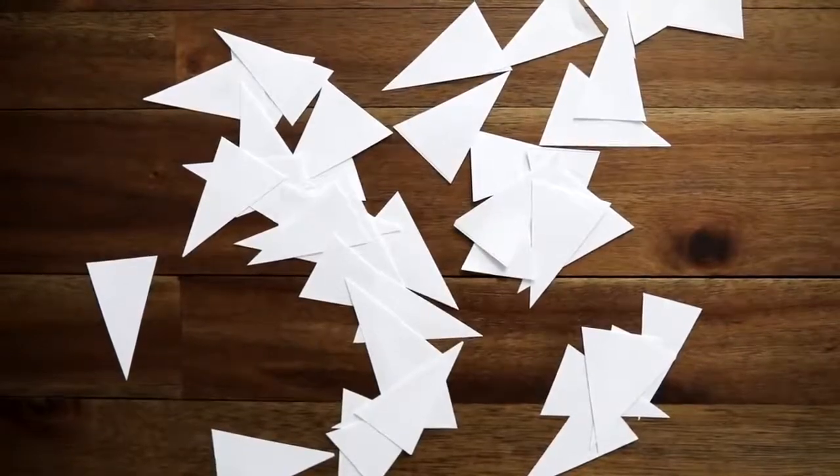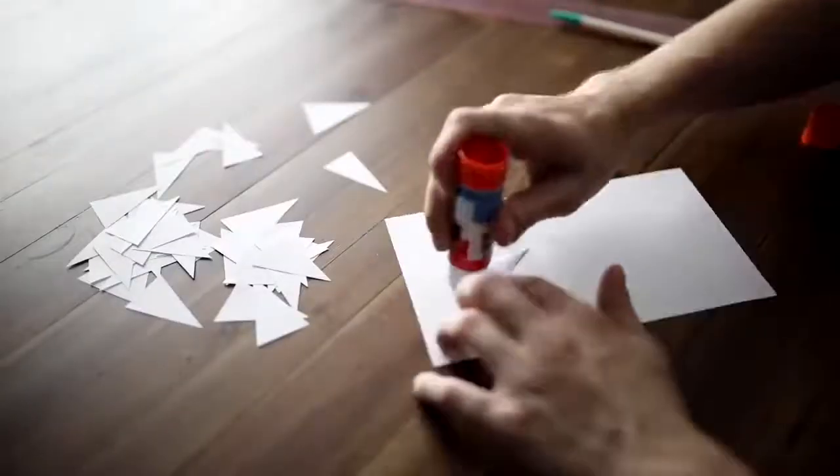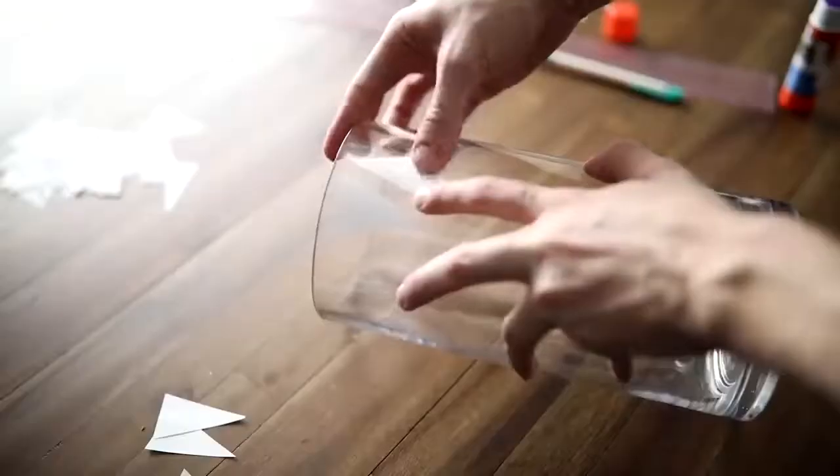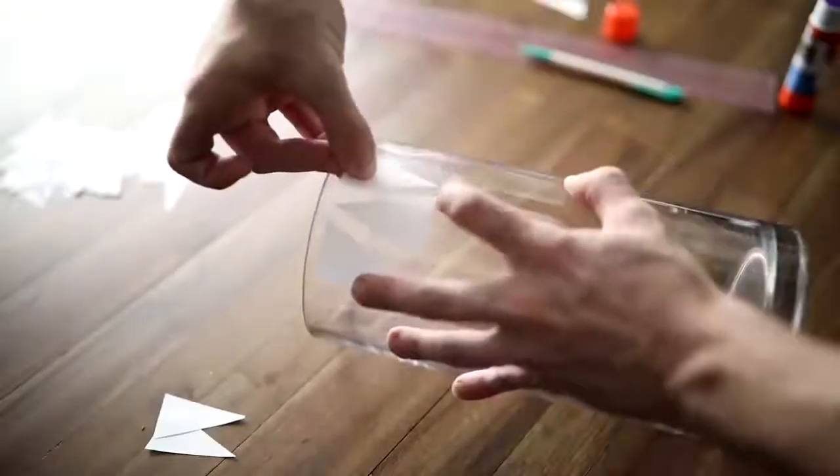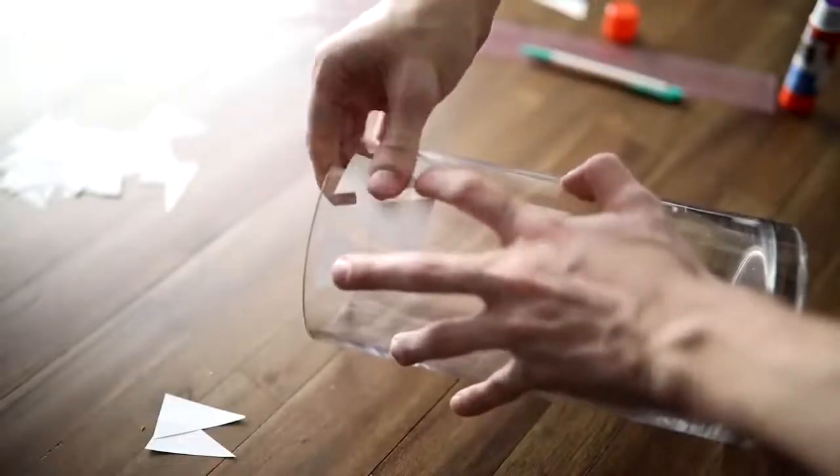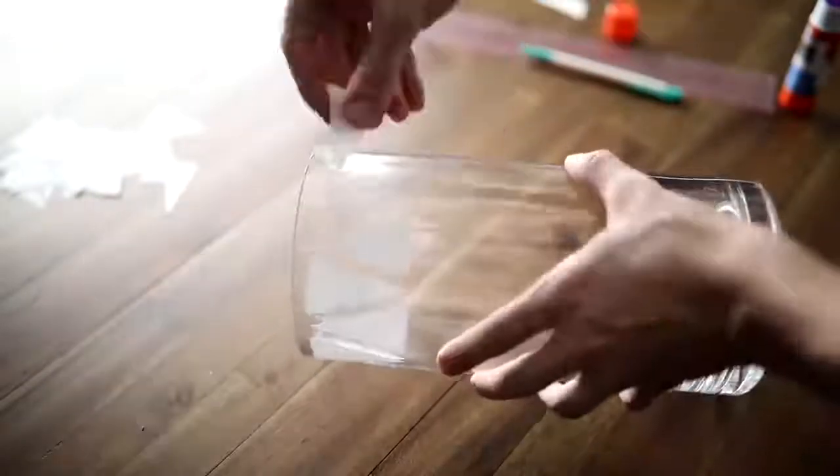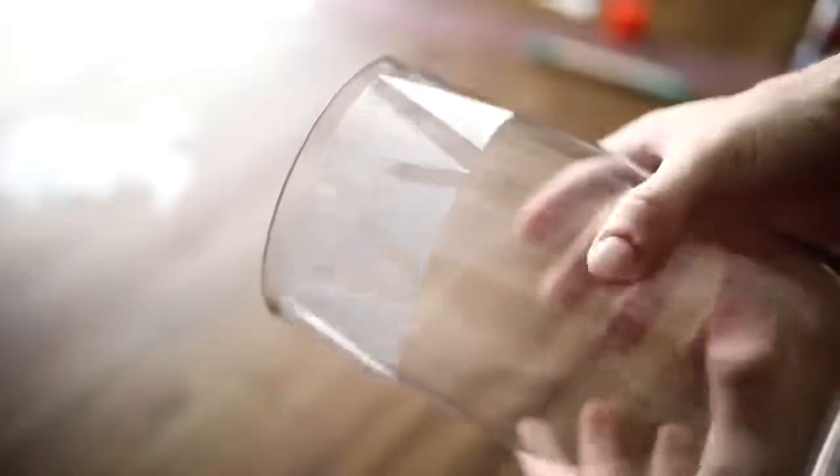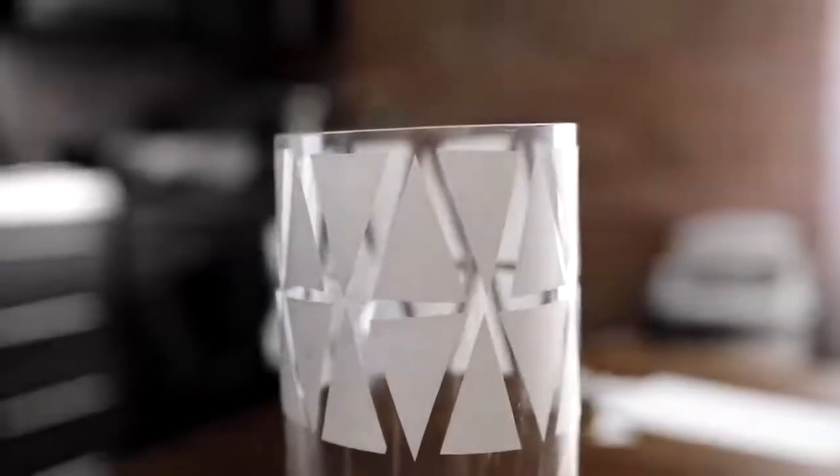Basically, you can cut out any shape you would like out of just regular old printer paper and apply a bit of Elmer's glue stick to the back of that and just let the Elmer's glue stick dry. Once this dries, it actually turns into a slightly tacky but removable masking piece. It's kind of like a Post-it note. You can put it on there and remove it.